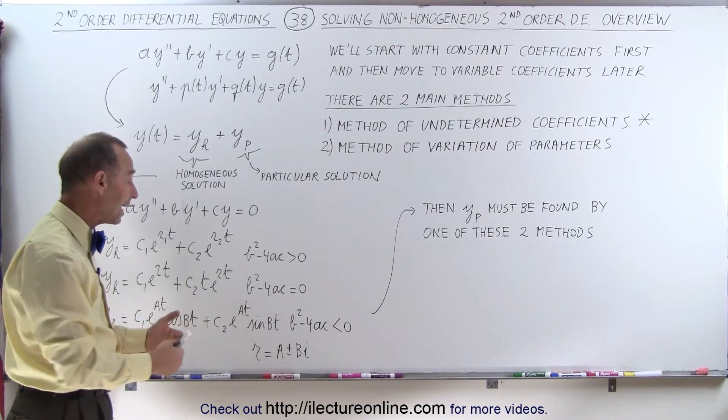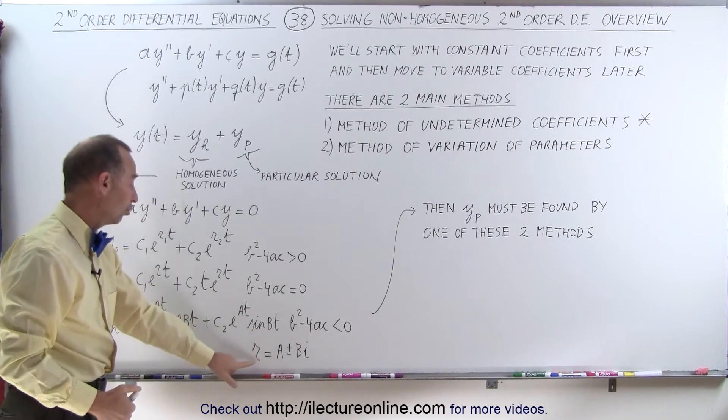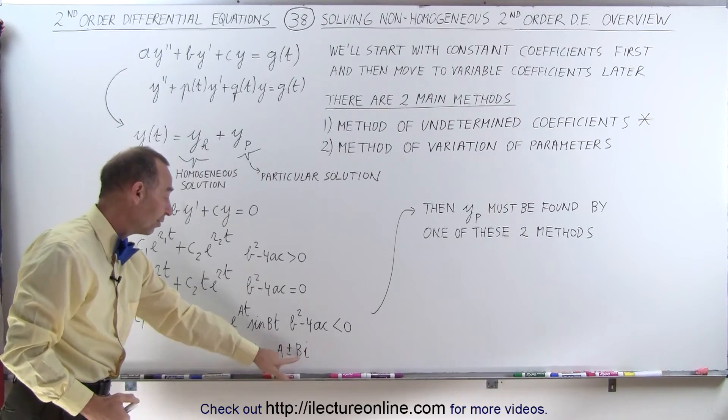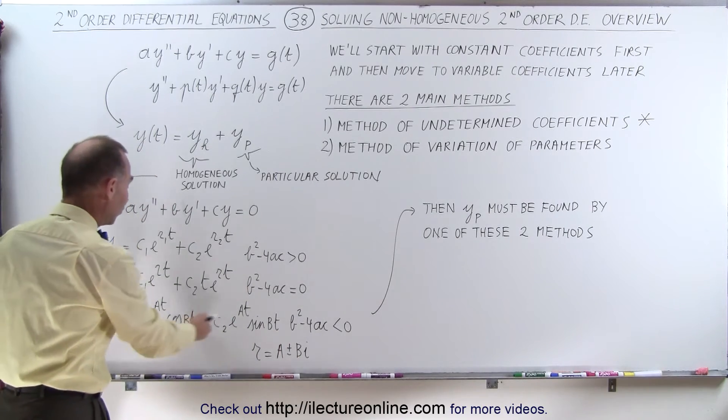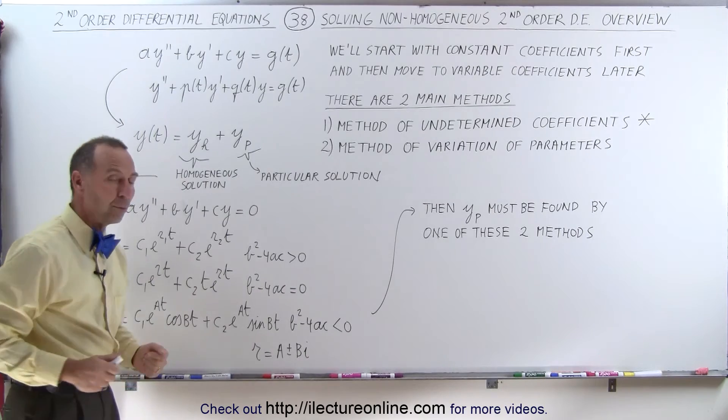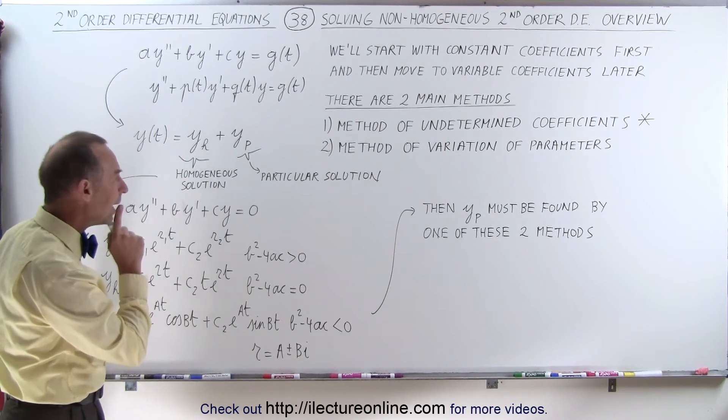Of course, when it's less than zero, we get imaginary solutions. The roots are going to be a plus or minus bi, and so we have this format of the homogeneous solution equation.